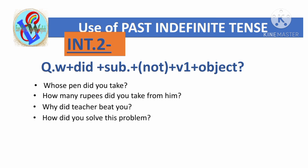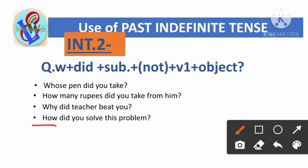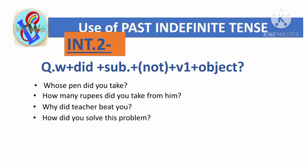'How did you solve this problem?' Here 'how' is the question word, then 'did', then 'you' is the subject, 'solve' is the first form of the verb, and 'this problem' is the object.